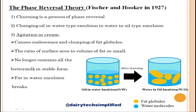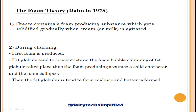After churning, the oil-in-water type emulsion changes into a water-in-oil type emulsion. As churning proceeds, the volume of fat globules increases and the surface area decreases. With progressive churning, the reduced surface area can no longer hold all the buttermilk. Agitation causes coalescence and clumping of fat globules until the ratio of surface area to volume becomes so small that the reduced surface area can no longer contain the buttermilk in stable form. It then breaks suddenly, giving butter grains consisting of a water-in-oil type emulsion and free buttermilk.